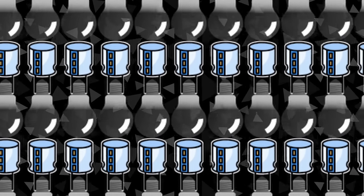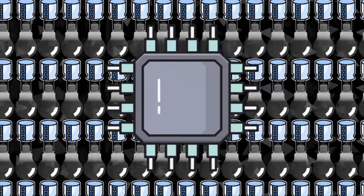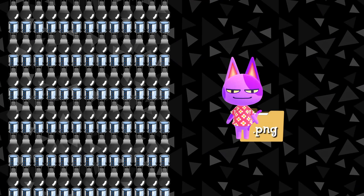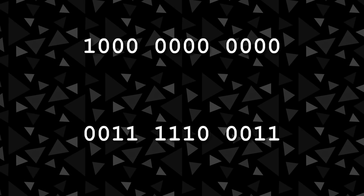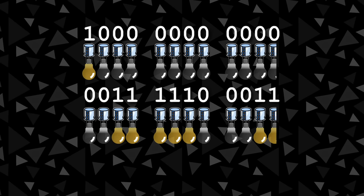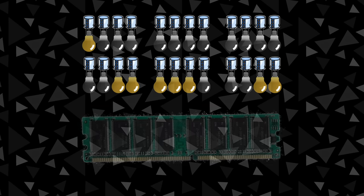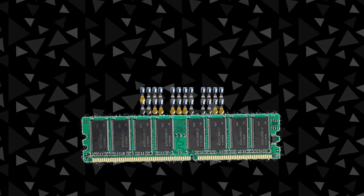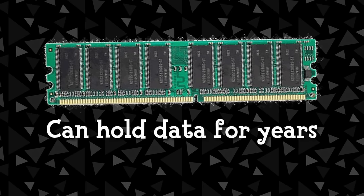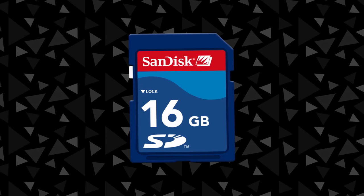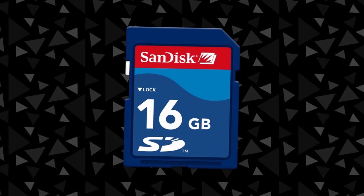Now picture millions of these cells all packed together with a special controller that can read and change the charge of these cells. Let's say we want to store an image of a cat — every color of every pixel is decompiled into a binary number, and then the respective capacitors are either charged or discharged to match these values exactly, effectively storing the information to be read and recompiled later. This is how modern computer memory actually works, and a well-engineered system can hold these charges for years — which is why SD cards still work and hold the exact data you saved on them, even after years of not using them.